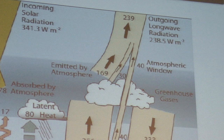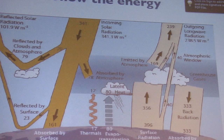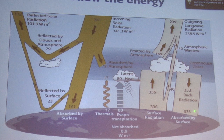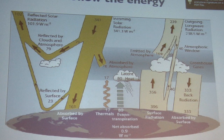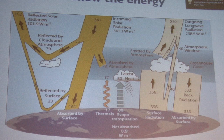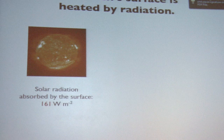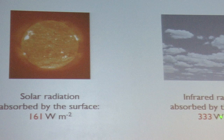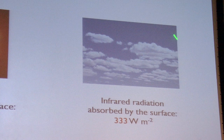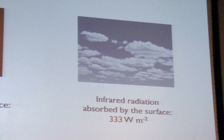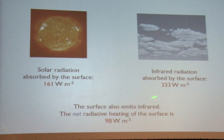Very important point: the atmosphere is emitting down as well as up — emissions go in all directions. Some of the photons go back down: 333 watts per square meter down. Compare that to the solar absorption number — it's twice as big. There's twice as much energy coming down from the atmosphere as there is absorbed from the sun. Solar radiation absorbed by the surface: 161. Infrared absorbed by the surface: 333 — just to make the point again, this is twice as big as that. This really keeps the planet much warmer than it would be if we didn't have an atmosphere. The net radiative heating of the surface, including everything, is about just under 100 watts per square meter — a 100-watt light bulb per square meter.